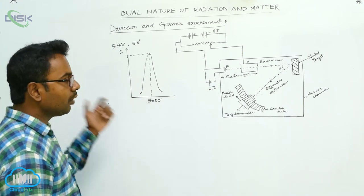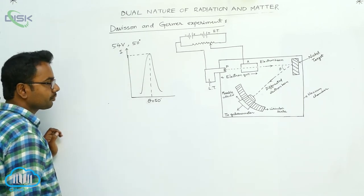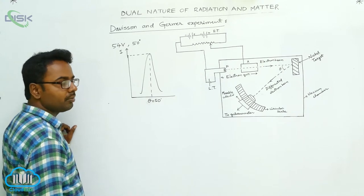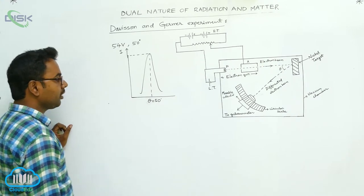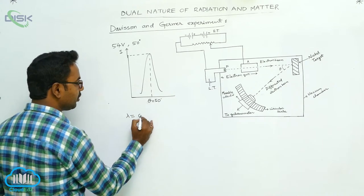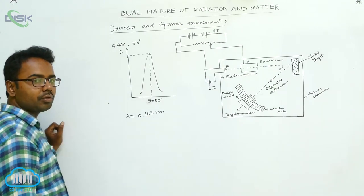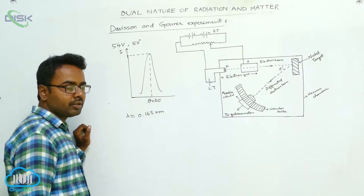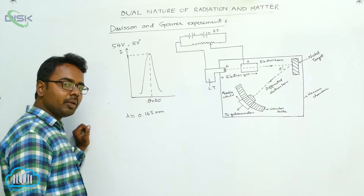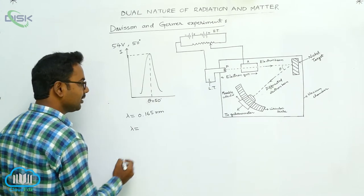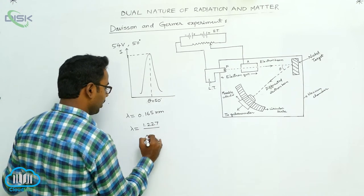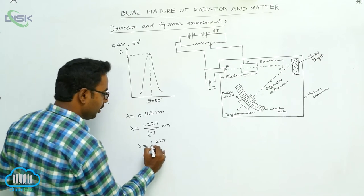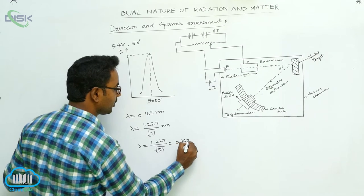At this scattering angle and potential difference, we find the wavelength associated with the electrons. Using electron diffraction techniques, the wavelength associated with the electrons is measured as 0.165 nanometers. Using the de Broglie relation, lambda equals 1.227 divided by the square root of V nanometers, with V equal to 54 volts, we get lambda approximately equal to 0.167 nanometers.